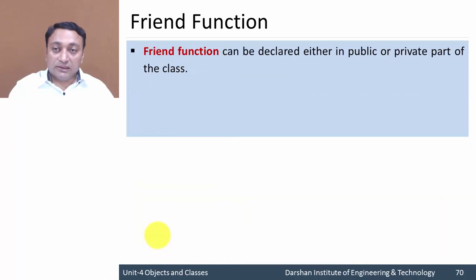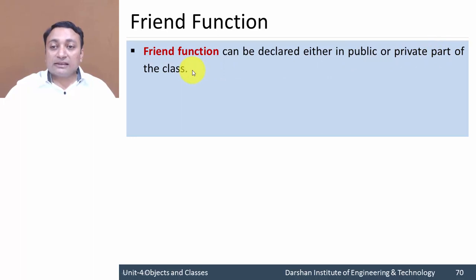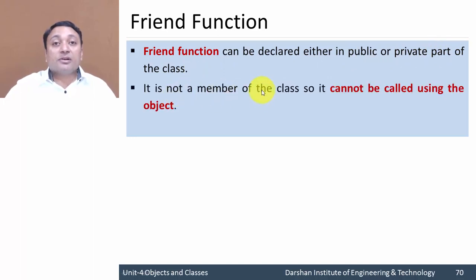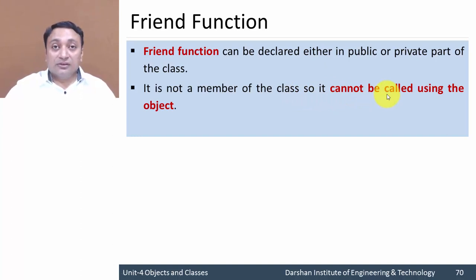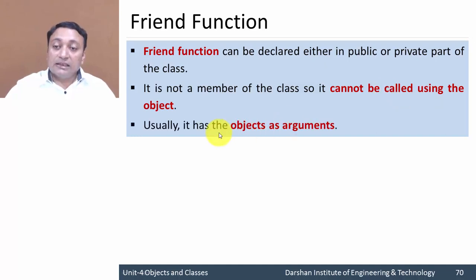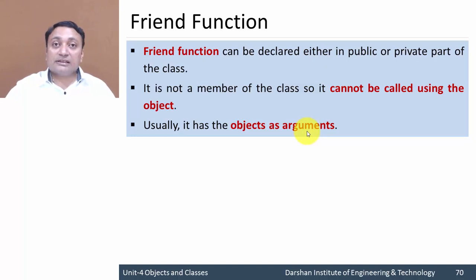A friend function can be declared either in the public or private part of a class. It is not a member of the class, so it cannot be called using an object — there is no need to create an object to invoke it. Usually, a friend function takes objects as arguments.